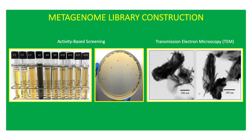One positive transformant, designated as A1, showed visible tellurite-reducing activity. Transmission electron micrograph of A1 recombinant cells exposed to tellurite ions revealed intracellular tellurium crystals.